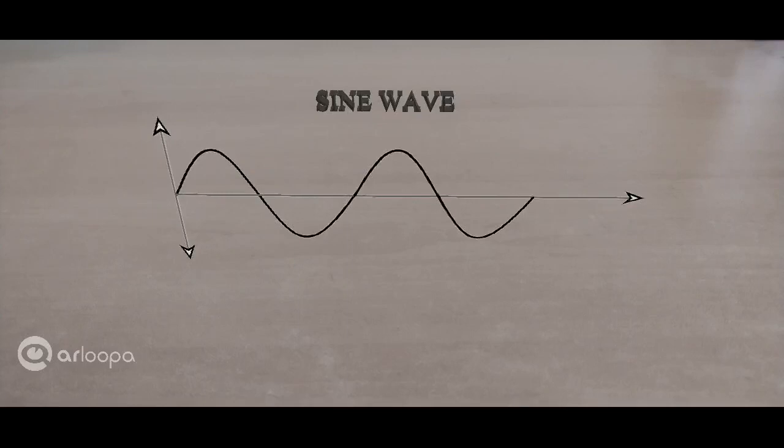So let's understand what is a sine wave. A sine wave or a sinusoid is a mathematical curve that describes a smooth periodic oscillation. It is a continuous wave. The curve gradually goes up and down following a sine pattern.